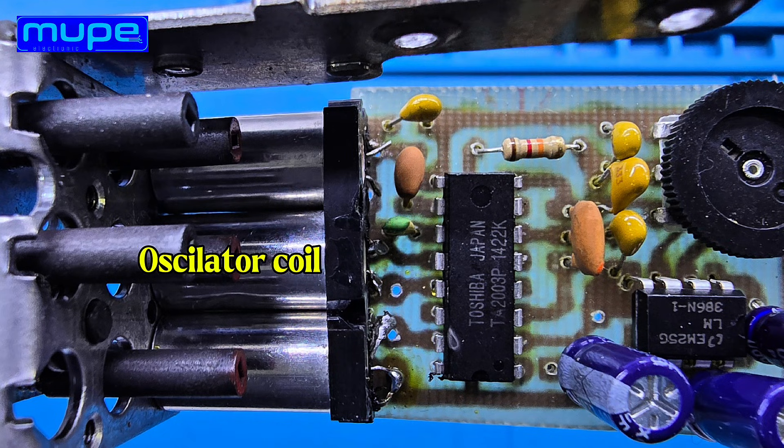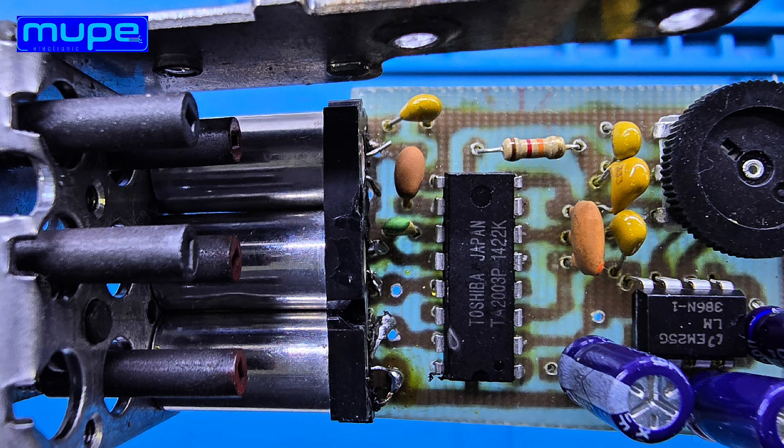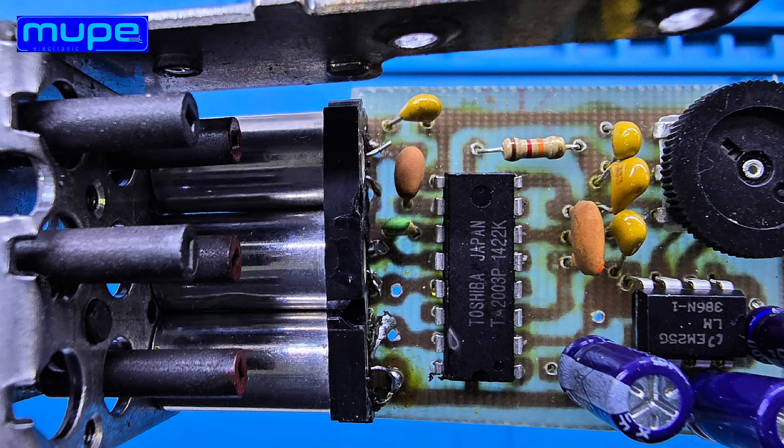The permeability tuned circuit is ready, and I'm testing it now. The ferrite tuning feels smooth, and the receiver locks onto stations cleanly. It's great to see this classic tuning method come alive again.